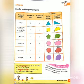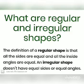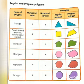You can see here two types of polygon: irregular polygon and regular polygon. A regular polygon has all equal sides and all equal angles, but an irregular polygon has sides and angles that are not equal.